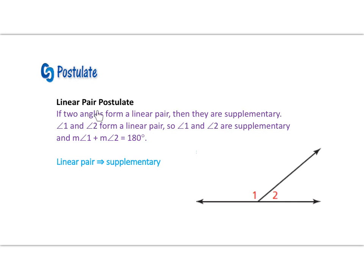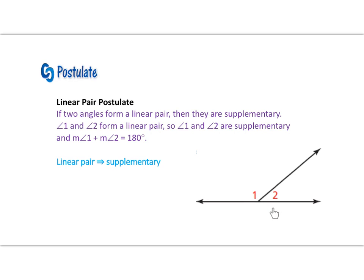Our single postulate for this lesson is the linear pair postulate. It states if two angles form a linear pair, then they are supplementary. In our diagram, angle 1 and angle 2 form a linear pair, so they are supplementary — meaning the measure of angle 1 plus the measure of angle 2 equals 180 degrees. Our implied statement: linear pair implies supplementary. This is also a postulate we can conclude just by looking at a diagram.